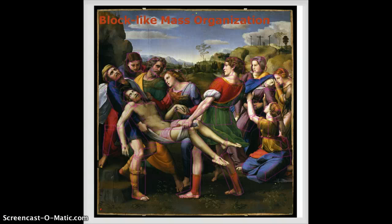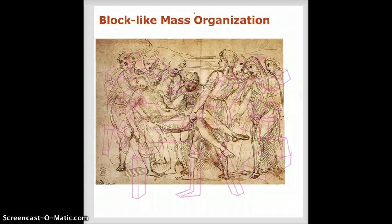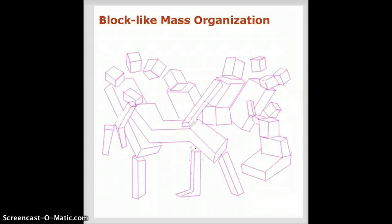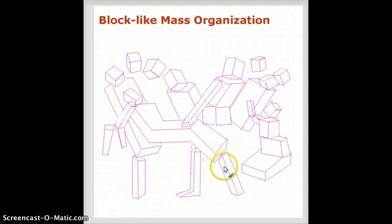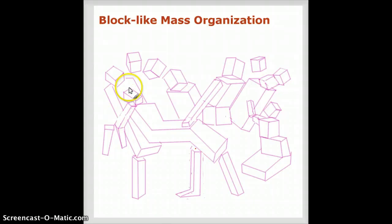Which is the block-like mass organization. If you look a little bit closer at the figures, you will notice this block-like underlying structure of basic forms. And even without the painting, this block-like mass organization is full of beauty, the way that the forms are interlapping and overlapping. There's a great movement — a rhythm going on through this — and I'm going to draw one of the main movements in this block-like mass, which is this infinity symbol.